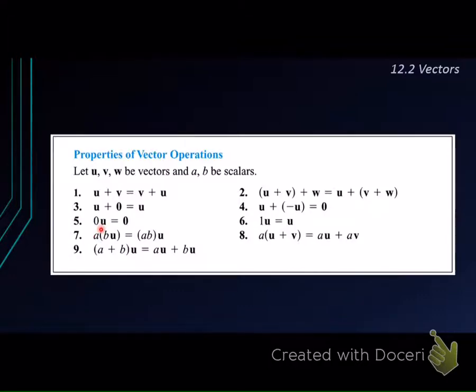Number five, if we have a zero, number zero, multiply with a vector u, we will get a zero vector. But if we take one, multiply with a vector u, we will always get back the u.